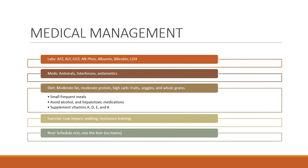The diet suggested for patients with hepatitis includes moderate fat and moderate protein with high carbohydrates — healthy ones like fruits, vegetables, and whole grains. The patient should eat small frequent meals and avoid alcohol and hepatotoxic medications like Tylenol. They need to supplement fat-soluble vitamins A, D, E, and K, which are normally stored in the liver. Exercise should be as tolerated — low impact, walking is great, and light resistance training. Rest is also very critical; you want to schedule rest, and that includes resting the liver by avoiding toxins.